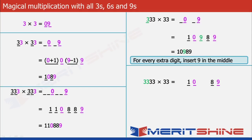And for the extra 2 digits, we will add 2 extra 9s in the middle, thereby giving us our answer as 109989.